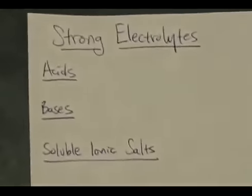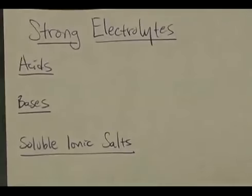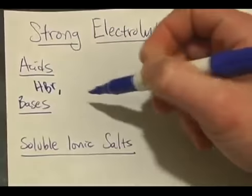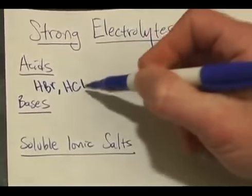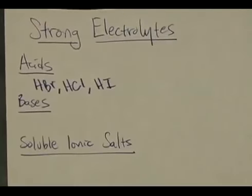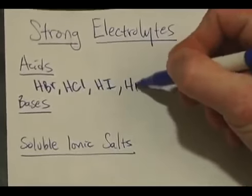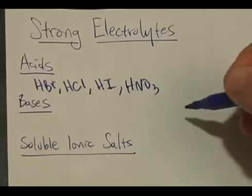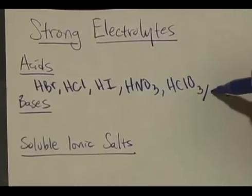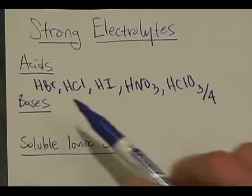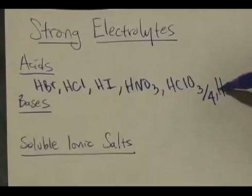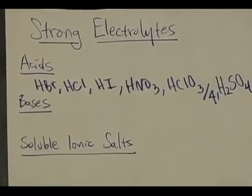So which are the strong electrolytes? Strong electrolytes include seven strong acids. Here's how to remember them: HBr (hydrobromic acid), HCl (hydrochloric acid), HI (hydroiodic acid), HNO3 (nitric acid), HClO3, and HClO4 — don't forget it's 3 and 4, so that gives us six. And the last strong acid is H2SO4, sulfuric acid.